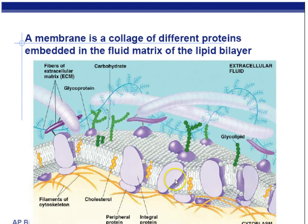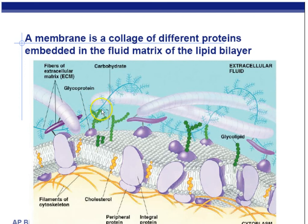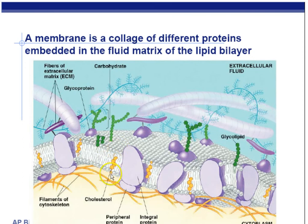We have integral proteins — protein channels used for facilitated diffusion and active transport. We have little carbohydrate side chains called glycoproteins for cell-cell recognition; these determine things like A blood type from B blood type, and can cause tissue transplant rejection. If your glycoproteins are similar to your family's, you may be able to get an organ from them. We also have cholesterol — a type of lipid — which maintains membrane fluidity in animal cells. Plant cells don't have it, but animal cells do.